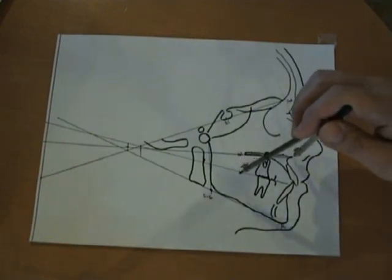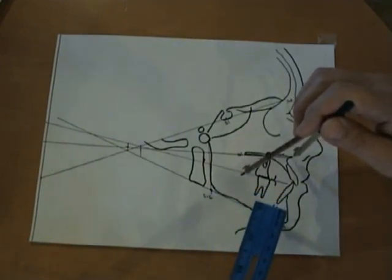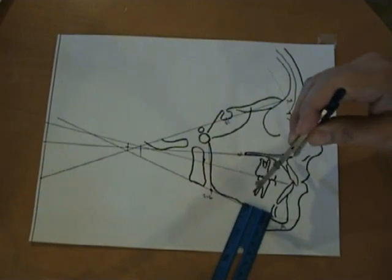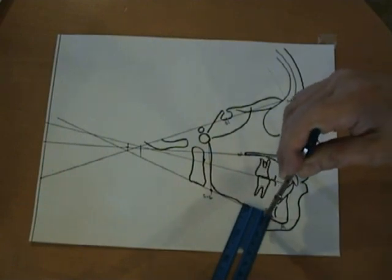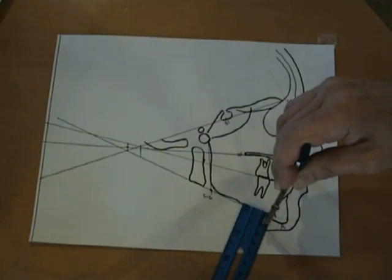Now get a ruler with a millimeter measurement and strike an arc 10 millimeters inferior to the first arc.